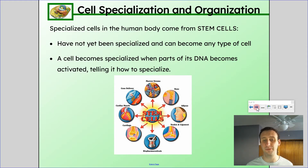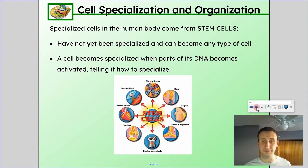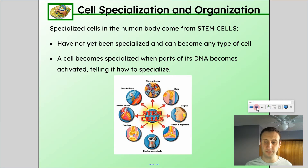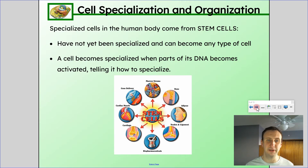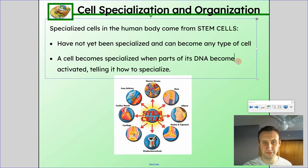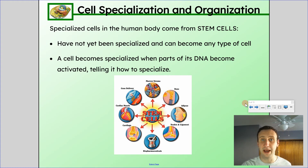Specialized cells in the human body originally come from stem cells, and we still have some stem cells in our body, mainly in our bone marrow. Stem cells are cells that have not yet been specialized — they haven't been differentiated into a specific type of cell, so they can become multiple types of cells. Embryonic stem cells can become any type of cell. A cell becomes specialized when parts of its DNA, called genes, get activated, essentially turned on, telling it how to specialize. As a result, stem cells can turn into other types of cells.